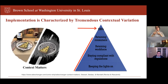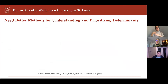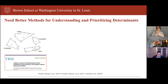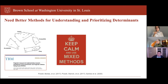We also stressed the need for better methods for understanding and prioritizing determinants. Frameworks like the Consolidated Framework for Implementation Research have done an amazing job laying out potential barriers, but we need better, more pragmatic measures that allow us to assess these factors routinely. We've done some work on criteria for pragmatic measures, published in Translational Behavioral Medicine led by Cameo Stanik. We've also stressed the importance of mixed methods — the combination of qualitative and quantitative methods is necessary to fully understand the nuances of context.